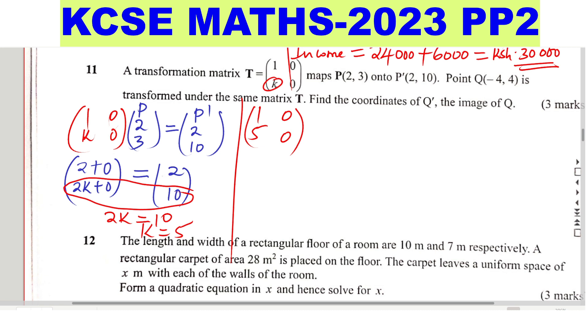Find the coordinates of Q', so here we have Q, and Q is negative 4, 4, so we just need to get Q'. So we multiply this, so row 1, column 1 times negative 4, you get negative 4, 0 times 4 plus 0, then row 2, 5 times negative 4, give negative 20, 0 times 4, you get plus 0. So this will give negative 4, negative 20, that is Q', the coordinates will be Q' will be negative 4, negative 20.